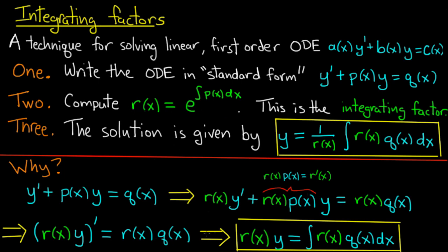Now we can rewrite the equation as (r(x)y)' equals r(x) times q(x). The equation written in this form we can solve by integrating both sides. We get r(x) times y equals the integral of r(x) times q(x), and we solve for y by dividing by r(x). There's where that formula came from.